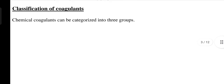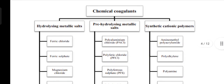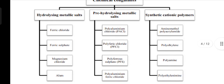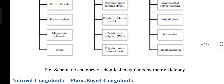Classification of coagulants: chemical coagulants can be categorized into three groups. The first group is hydrolyzing metallic salts, which include ferric chloride, ferric sulfate, magnesium chloride, and alum. The second is pre-hydrolyzing metallic salts, divided into poly-aluminium chloride (PACL), poly-ferric chloride (PFCL), poly-ferrous sulfate (PFS), and poly-aluminium ferric chloride. The last group is synthetic cationic polymers, including aminomethyl polyacrylamide, poly-alkylene, polyamine, and polyethylamine.